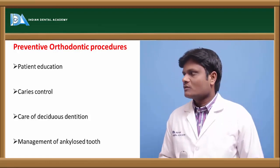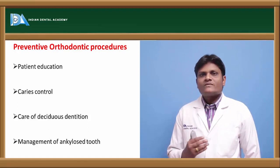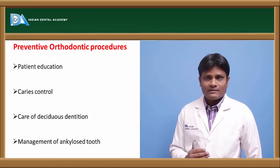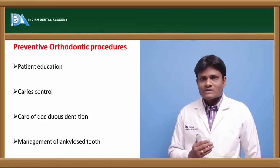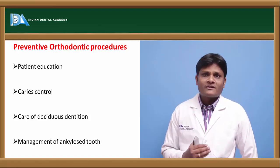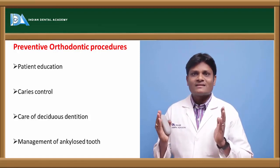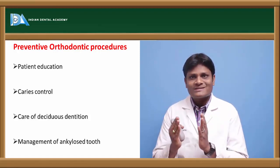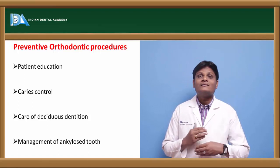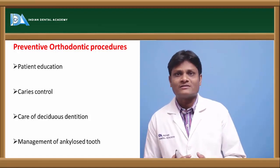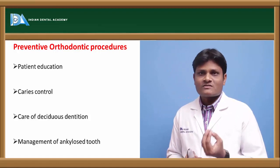The next important preventive orthodontic procedure is caries control, particularly in the deciduous dentition. Most malocclusions are claimed to occur because of discrepancy between arch length and tooth material. In a deciduous dentition, proximal caries lesions cause the two adjacent teeth to move towards each other, reducing the amount of arch length. Thereby there is more chance for development of crowding in that region — arch length is lost as a result of proximal caries in the deciduous dentition.